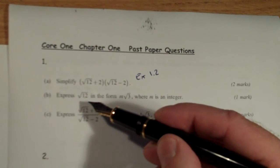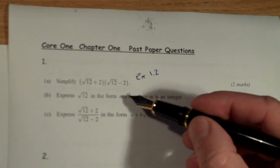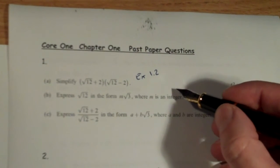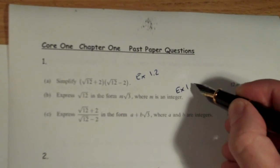Then in part B, we've got to simplify the square root of 12 in terms of root 3. Once again, that's on page 2 of your booklet, examples like that. So you want to look in example 1.1.